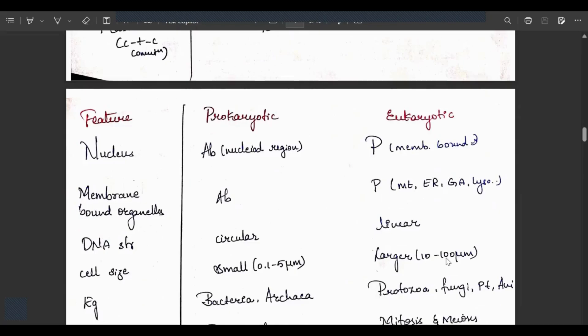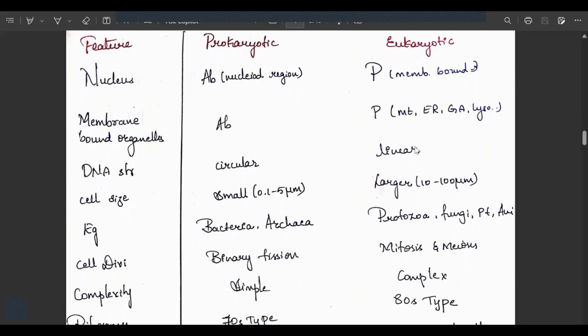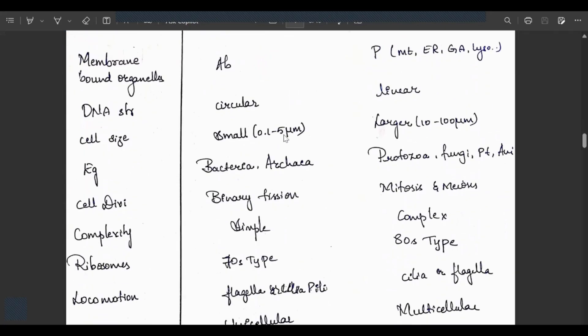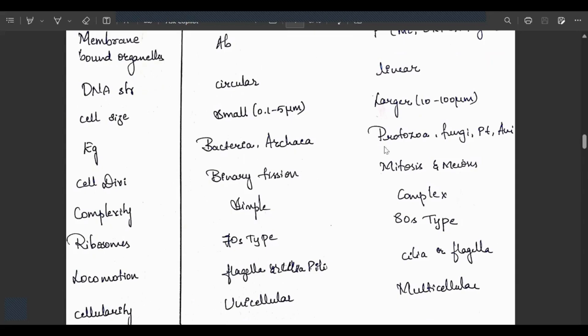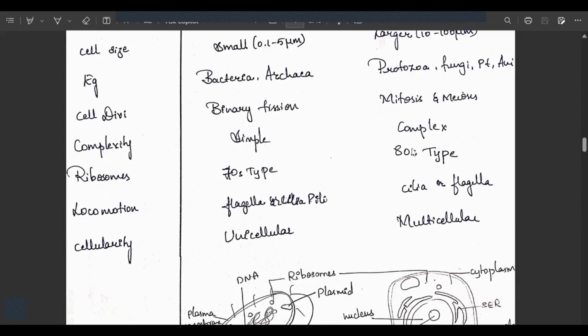Prokaryotic and eukaryotic cells. First feature is nucleus: absent in prokaryotic, only nucleoid region present, but eukaryotic has membrane-bound nucleus. Membrane-bound organelles absent in prokaryotic but present in eukaryotic like mitochondria, endoplasmic reticulum, Golgi apparatus, lysosomes. DNA structure is circular in prokaryotic, linear in eukaryotic. Cell size is small, 0.125 micrometers in prokaryotic, large 10 to 100 micrometers in eukaryotic. Examples are bacteria and archaea in prokaryotic, protozoa, fungi, plants and animals in eukaryotic.